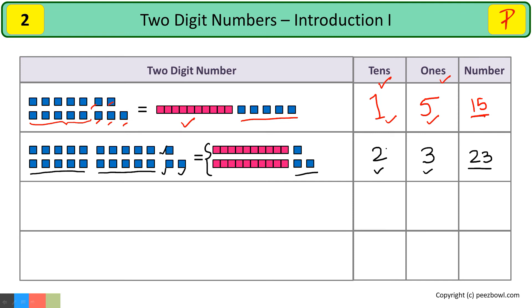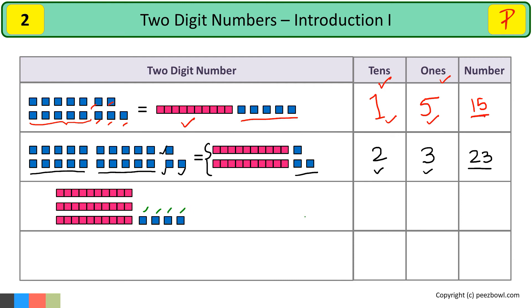See one more example. We need to find out which number is shown here. We have 1, 2, 3, and 4 ones, so I will write four at the ones place. And there are 1, 2, and 3 tens, so I will write three at the tens place. So this number is thirty-four. In thirty-four, the ones place value is four and the tens place value is three.